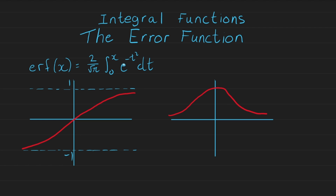If we were to plot the error function, it would look like the figure on the left, where we have bounds between 1 and minus 1. Those are asymptotes, and it takes the form of the red curve as you can see.